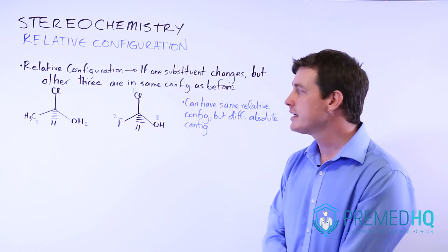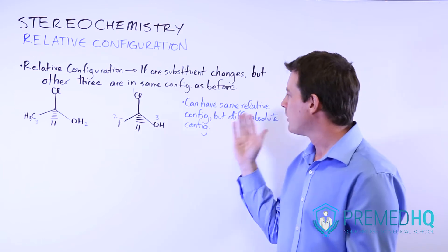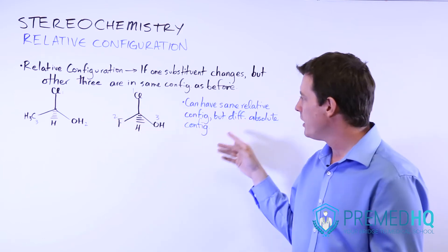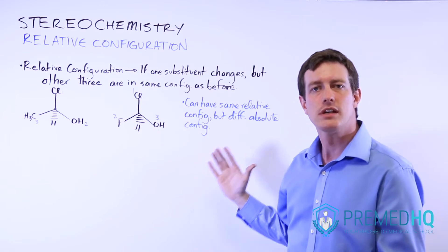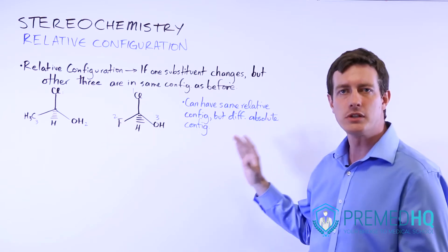Something else to be aware of is that things can have the same relative configuration, but because of the priority and numbering rules can actually have a different absolute configuration.